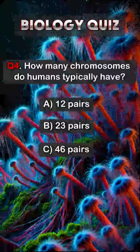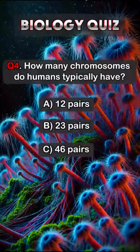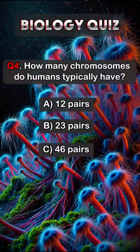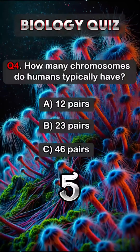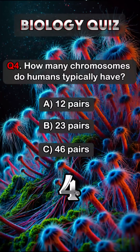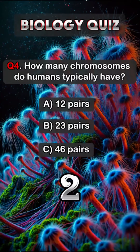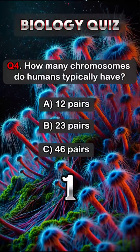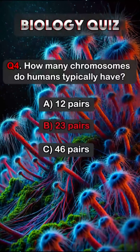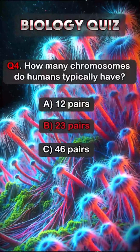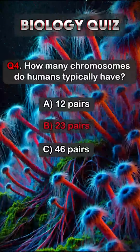Question 4. How many chromosomes do humans typically have? Answer B. 23 pairs.